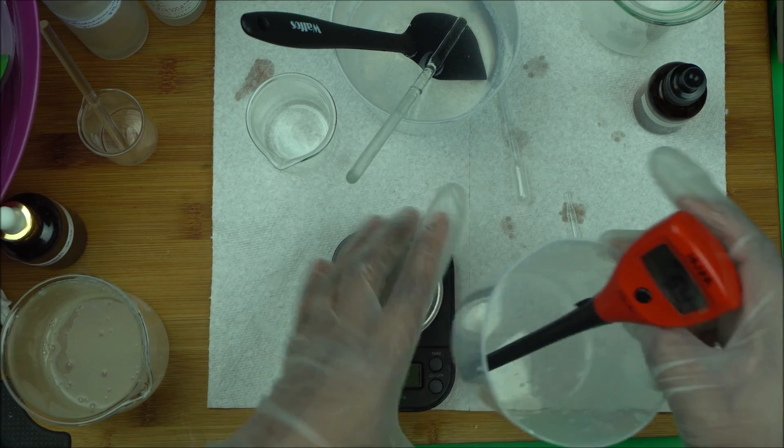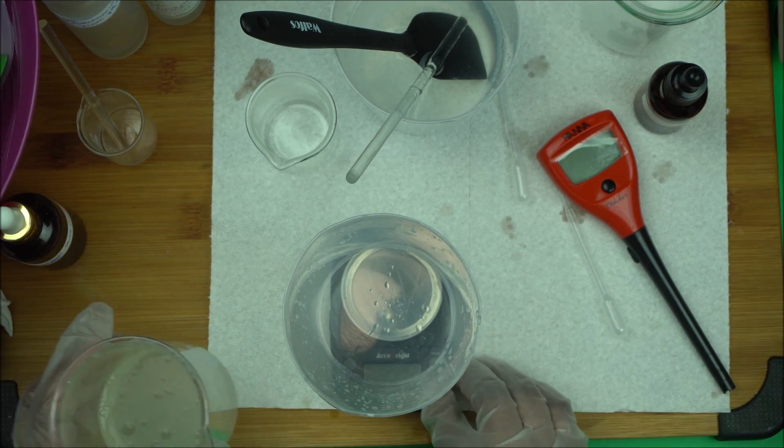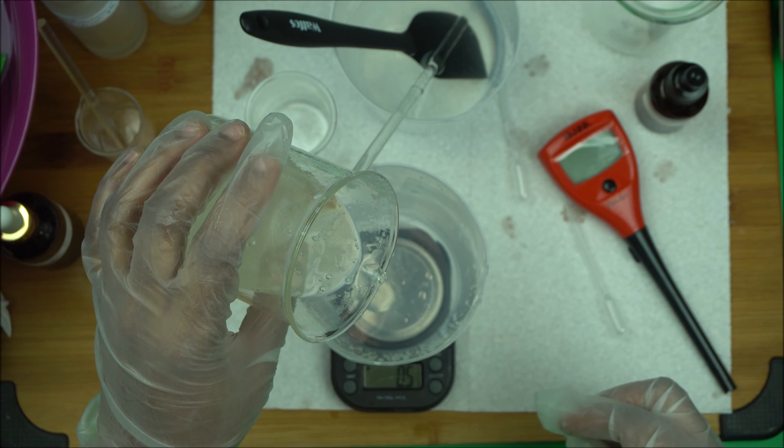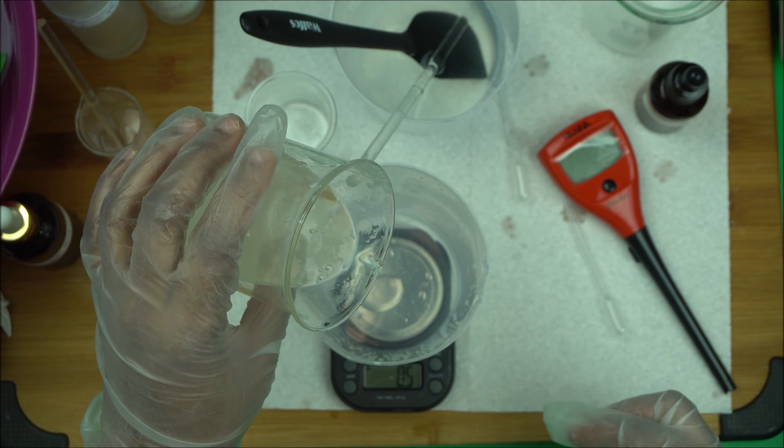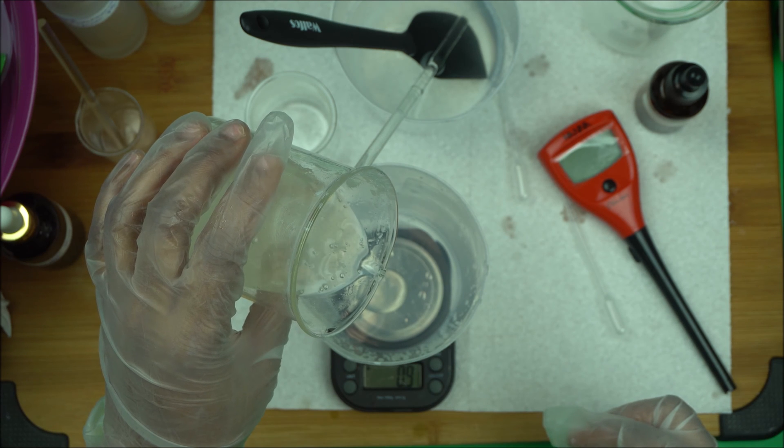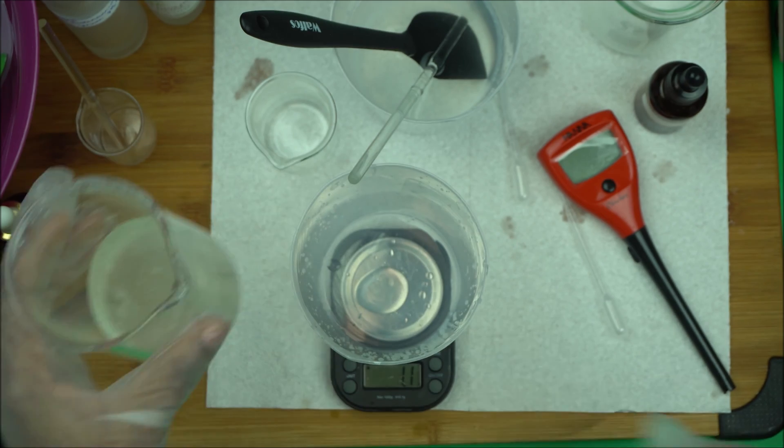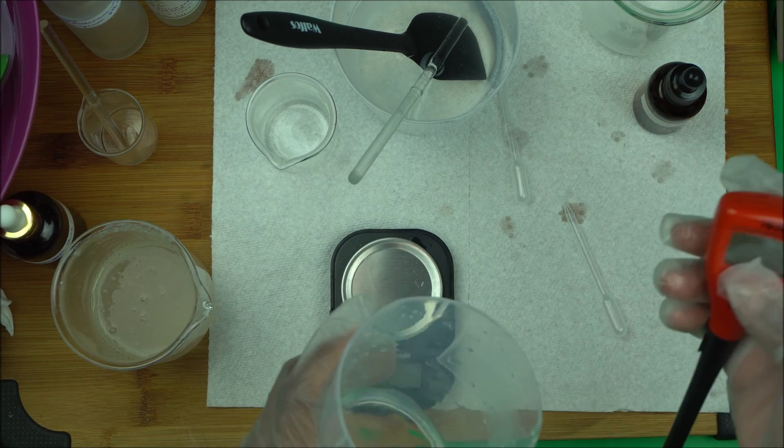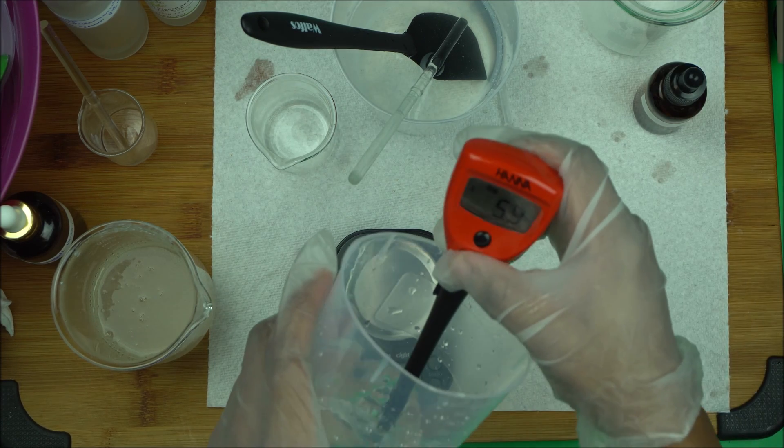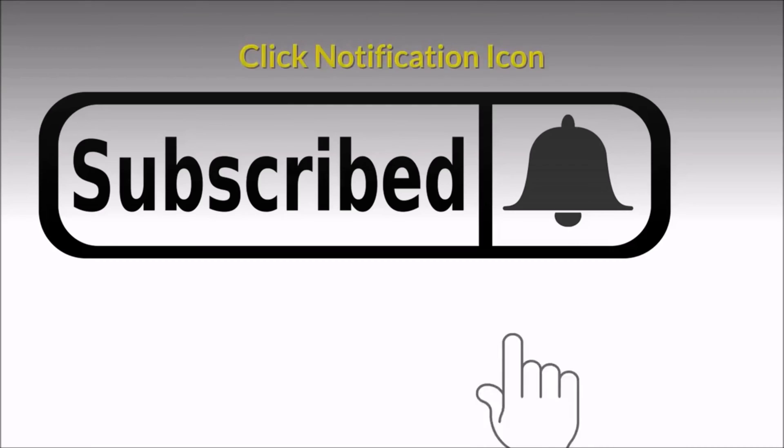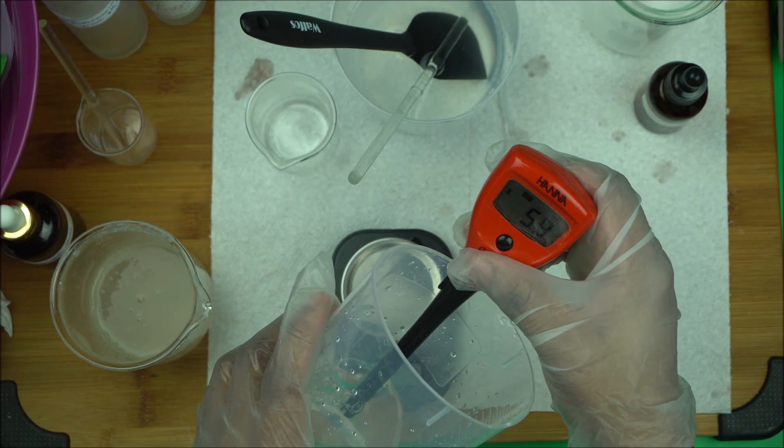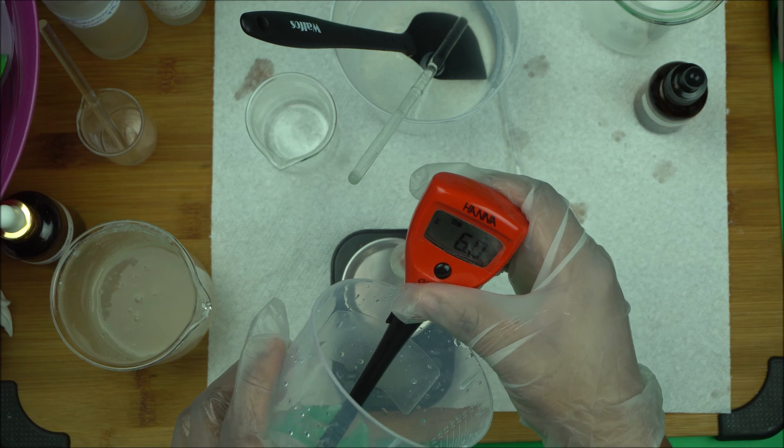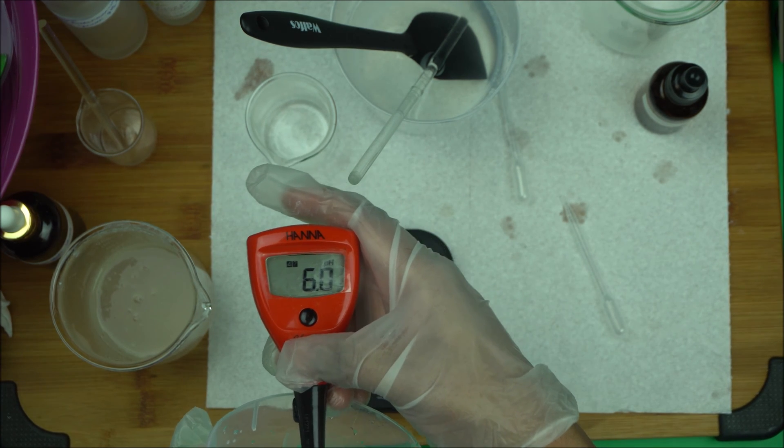I'm going to mix it very well and take 1% of the serum, then 9% of water. Then turn on your pH meter and put it in. And that's it. I have the pH of 6 and this is what I want for my Niacinamide serum.